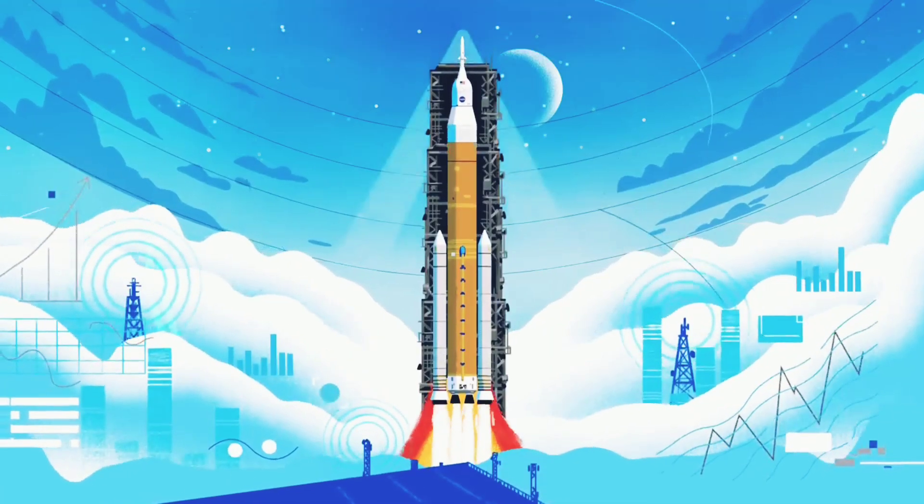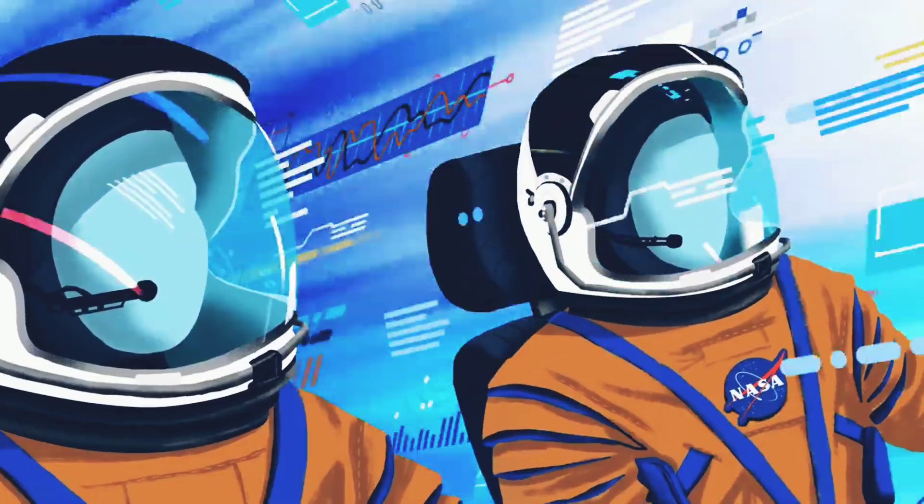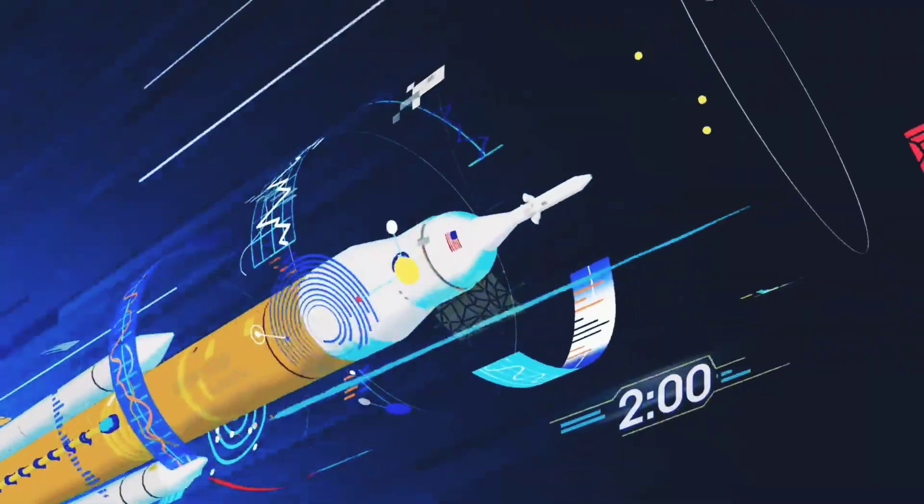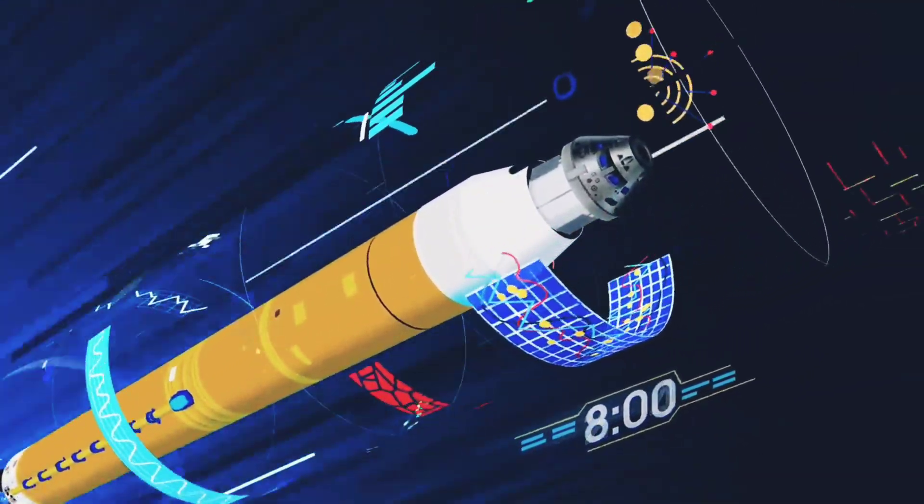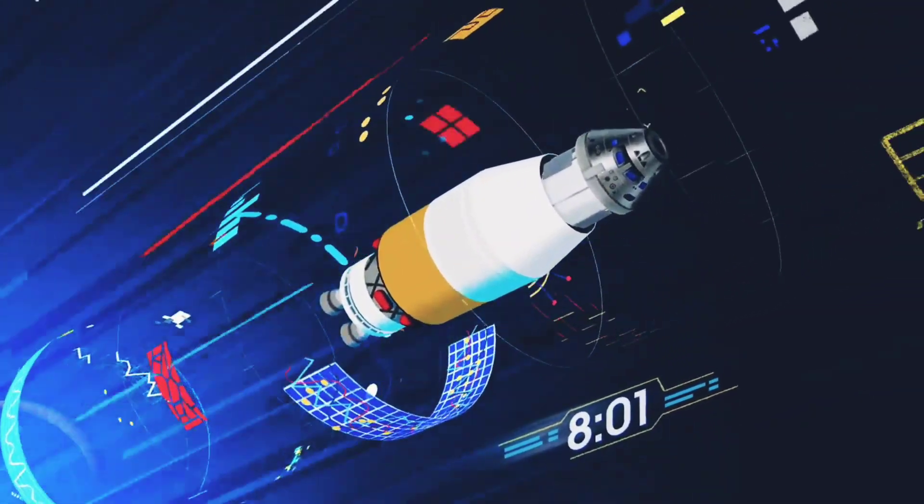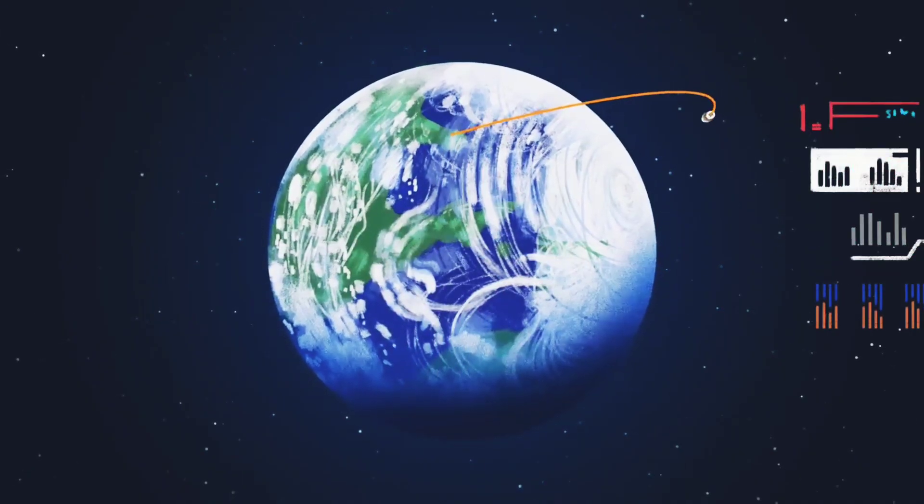All four RS-25 engines and the two solid rocket boosters come to life, thundering our crew upwards. Two minutes after ignition, the solid rocket boosters are spent and released. Eight minutes after launch, the core stage is depleted and separated. The upper stage fires briefly, placing Orion into a parking orbit around the Earth.